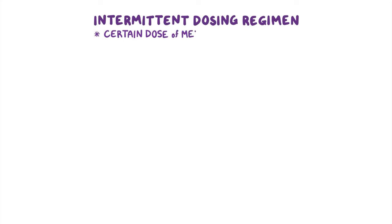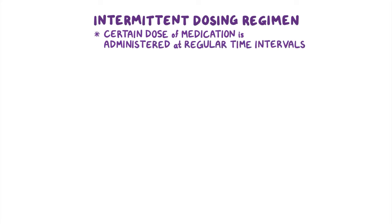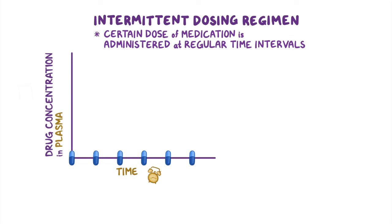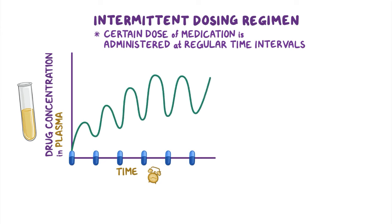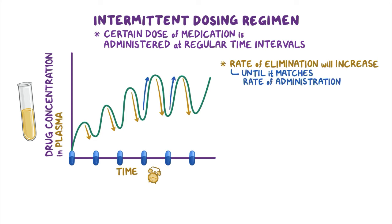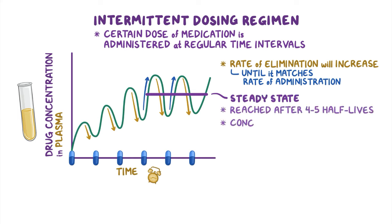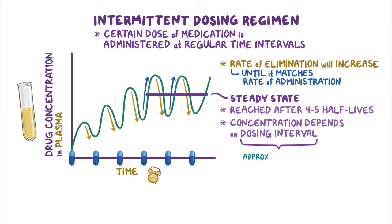Finally, there's an intermittent dosing regimen, where a certain dose of a medication is administered at regular time intervals through a given route. If the next dose is administered before the previous dose has been completely eliminated, the plasma concentration will progressively rise, fluctuating between peaks and troughs, until the rate of elimination matches the rate of administration. Just like in continuous infusion, steady state is usually reached after four or five half-lives, and the concentration at steady state depends on the dosing interval. For most medications, the dosing interval is approximately one half-life.